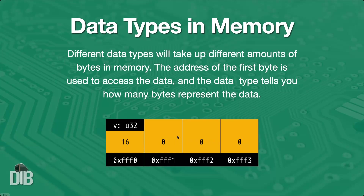That's an internal detail of how data is written to memory. The key point is that when we declare this variable with this data type, behind the scenes we allocate enough space — in this case four bytes. The first byte with the first address has the binding to the identifier and the data type. We only need to know this first address because, with the data type, we know how many other bytes are part of this memory region. So with just the base address and the data type, we can derive the rest.